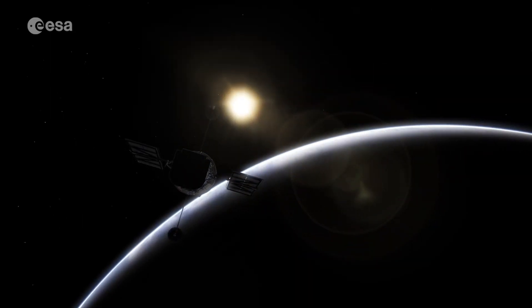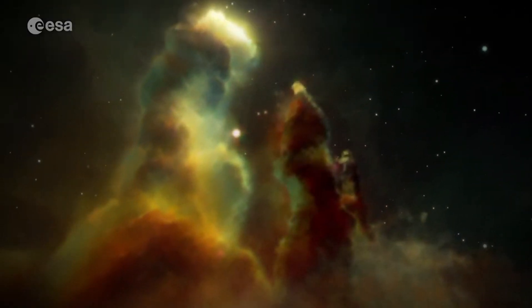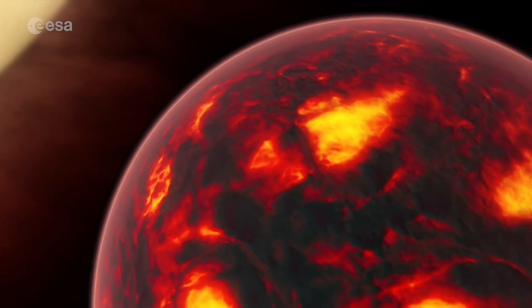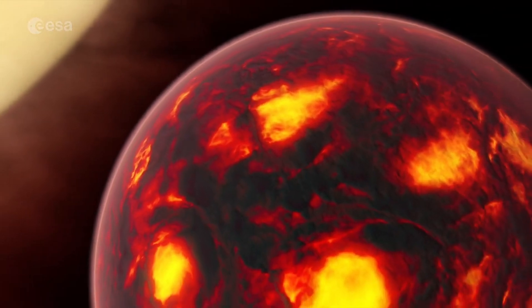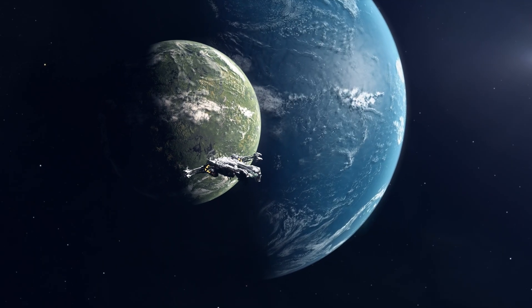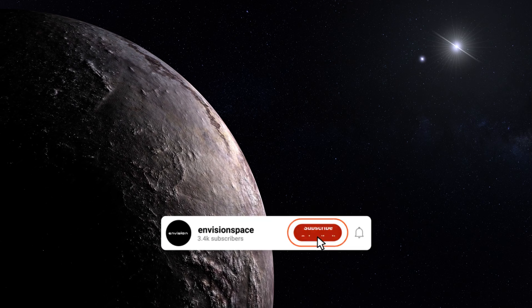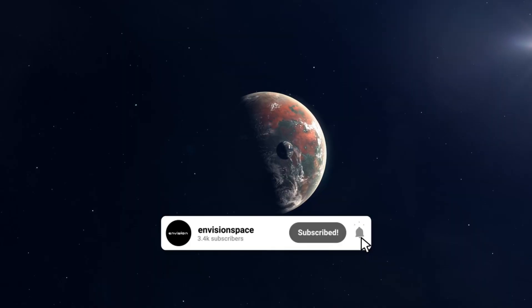These tools are a game-changer as they can detect faint emissions from distant stars and galaxies, and yes, even exoplanets. So, when scientists pointed it toward Proxima B, they were hoping to gather more information about its atmosphere, surface, and maybe even signs of biological life.